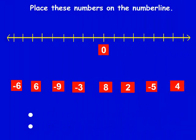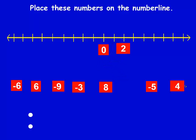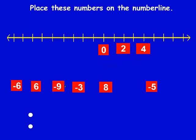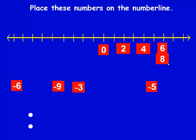We're going to try that again. I'm going to place them on the number line, starting with my positive numbers. I'll place positive 2, then 4, then 6, and then 8 on the right side of the number line.